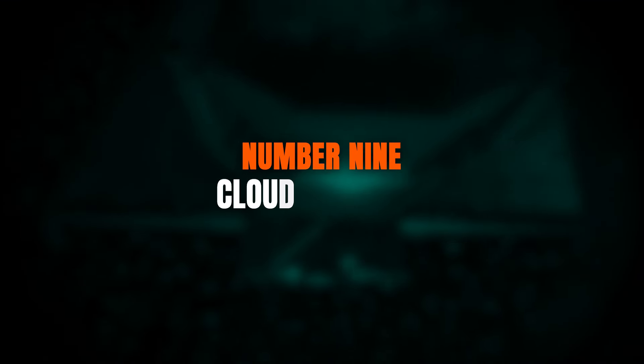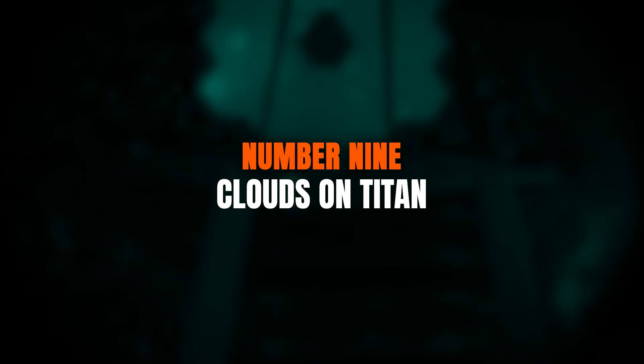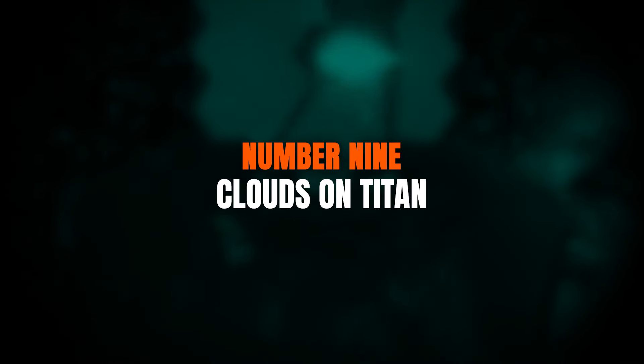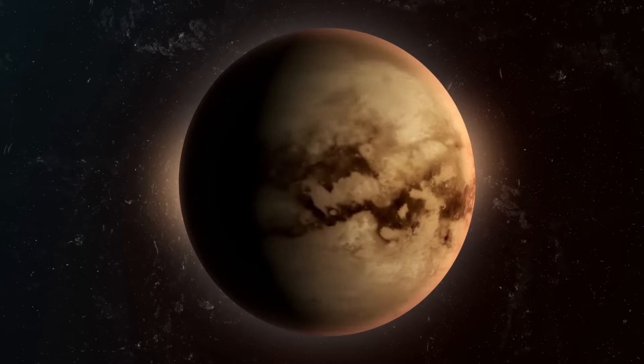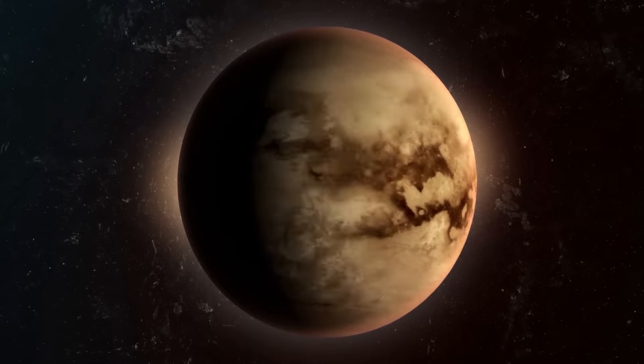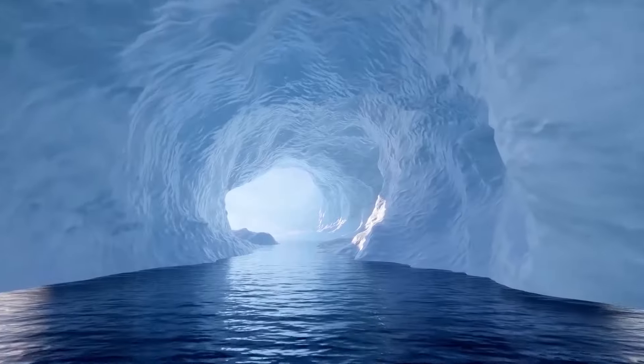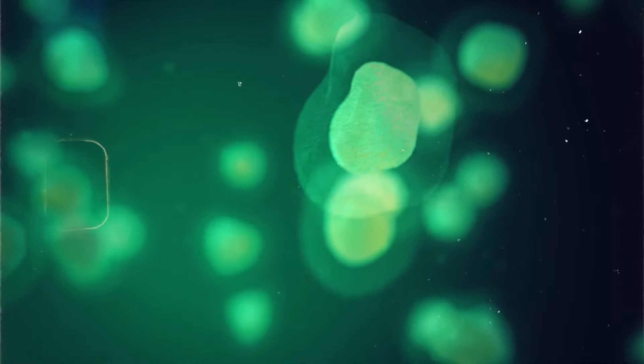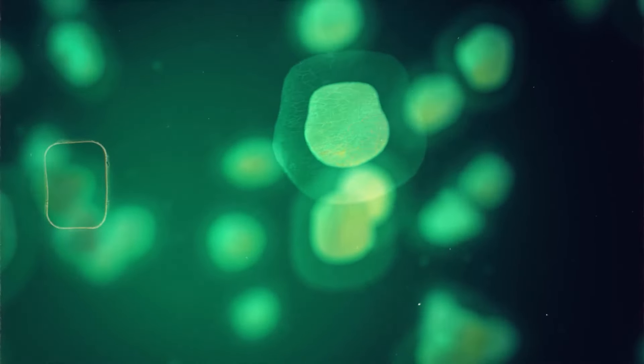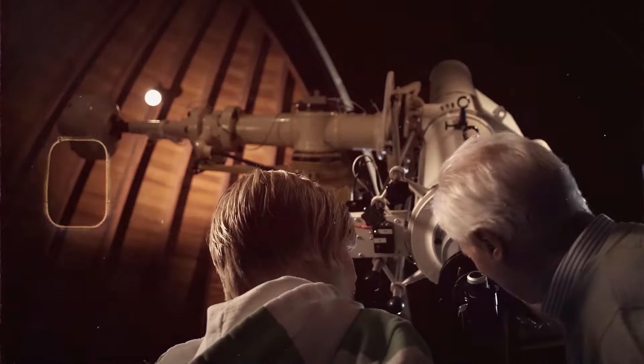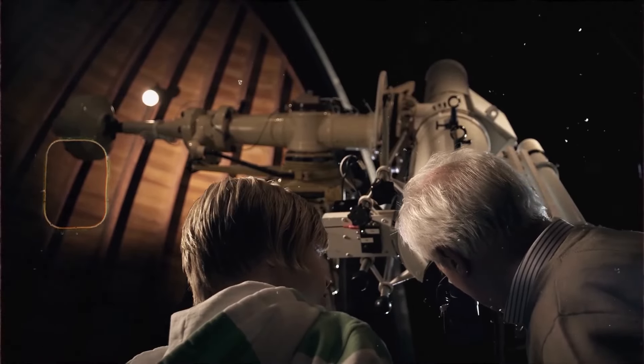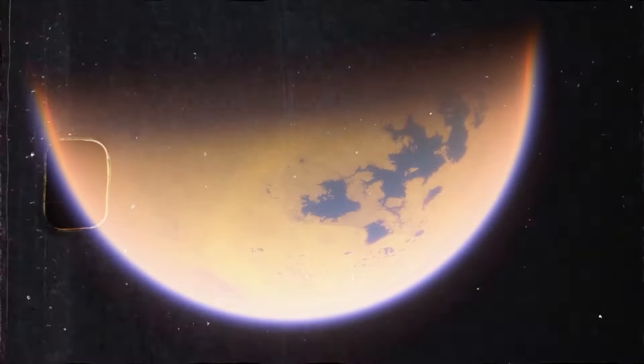Number 9. Clouds on Titan. Meet Titan, a weird and intriguing place. Unlike any other moon in our solar system, Titan has rock made of water, ice, rivers, lakes, and seas composed of liquid methane and ethane. It's also the only moon with a thick, hazy atmosphere dotted with methane clouds.